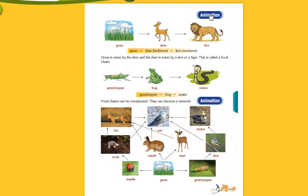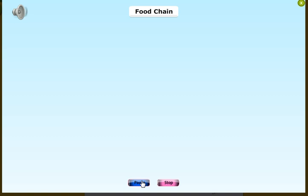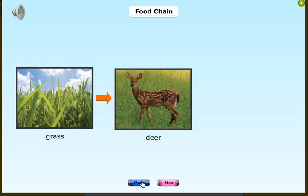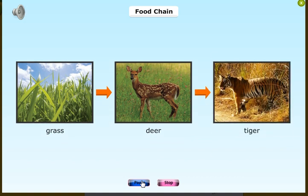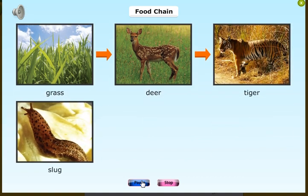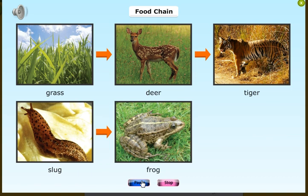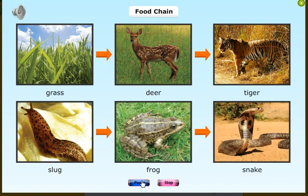Now we'll look at the food chain. Carnivores mostly feed on herbivores, and herbivores feed on plants. For example, grass is eaten by the deer and the deer is eaten by a tiger. Another example: a slug is eaten by a frog and a frog is eaten by a snake. This is the food chain.